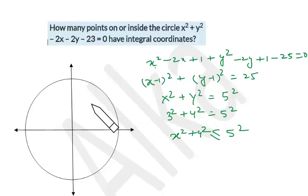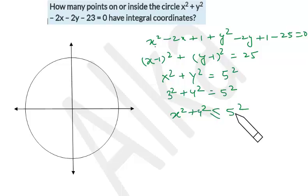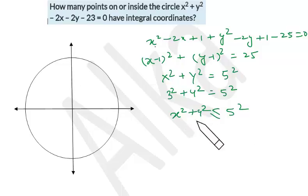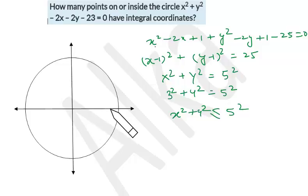Whatever calculation we do for the first quadrant, we can multiply by 4 to cover the entire circle. I will not take any coordinate as 0 initially to avoid confusion. For example, (4, 0) is an integral point satisfying the equation, but it lies on an axis shared between two quadrants — multiplying it by 4 would give the wrong answer. So avoid zeros first and calculate them separately.